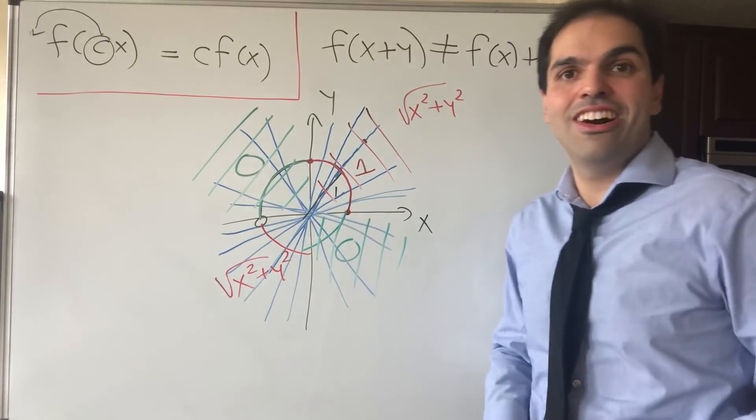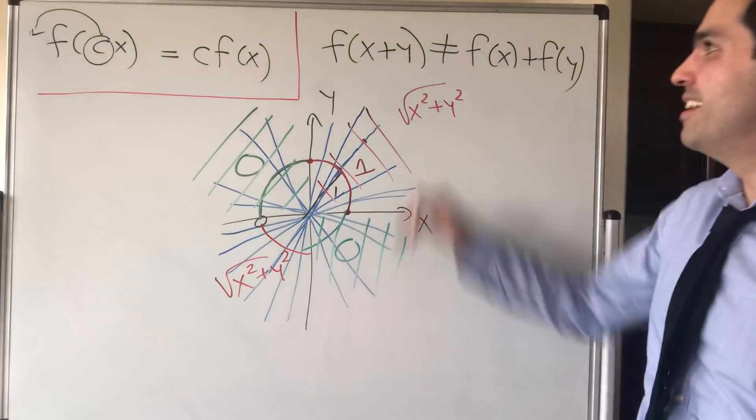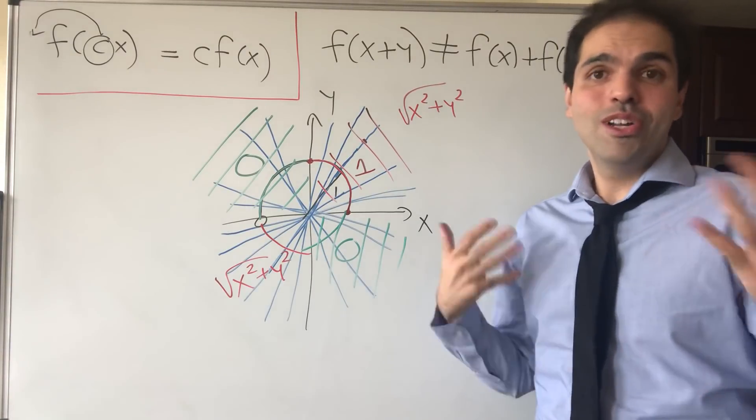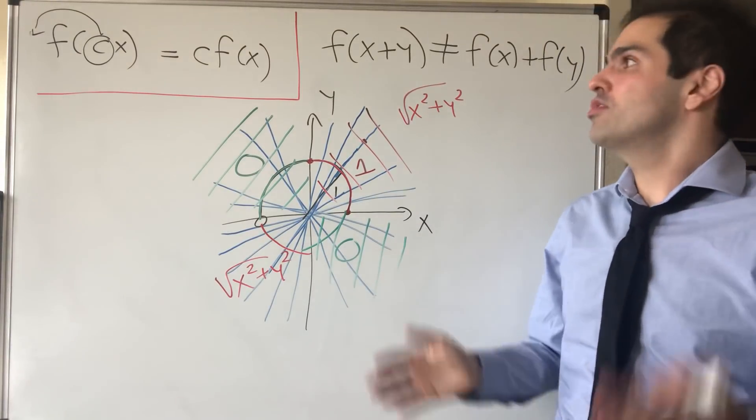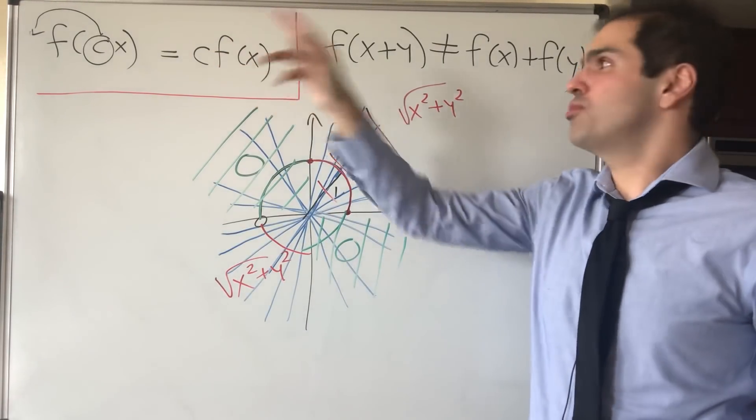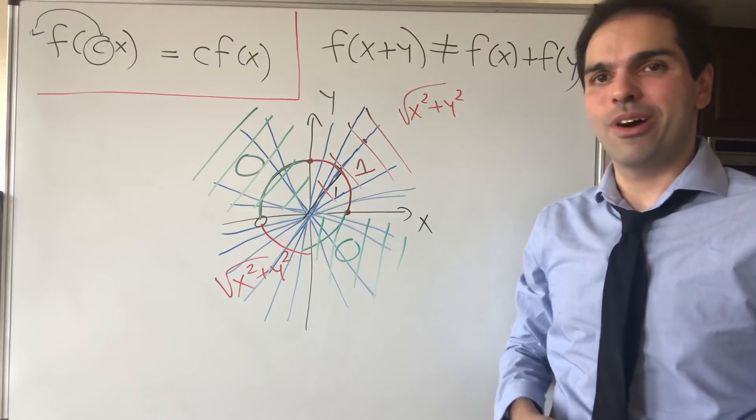Definitely not linear. It can't happen. So in particular, this property fails. Just to show you, there are examples of functions which satisfy this homogeneous property, but which do not satisfy the linear property.